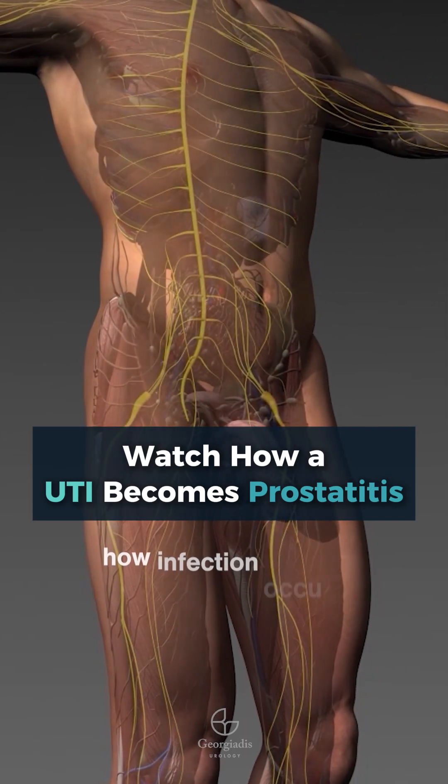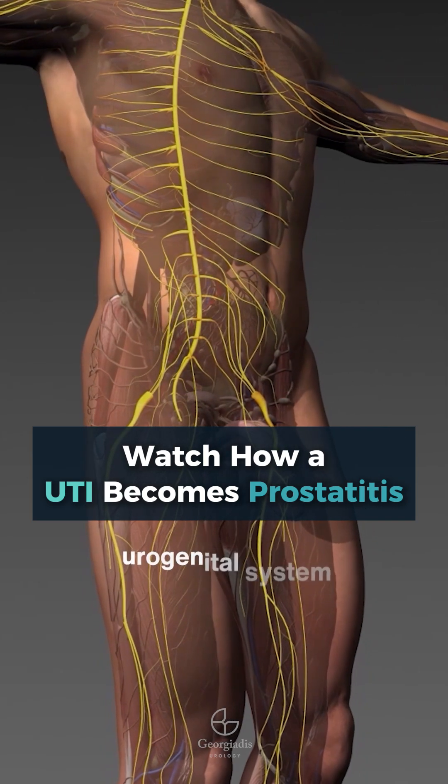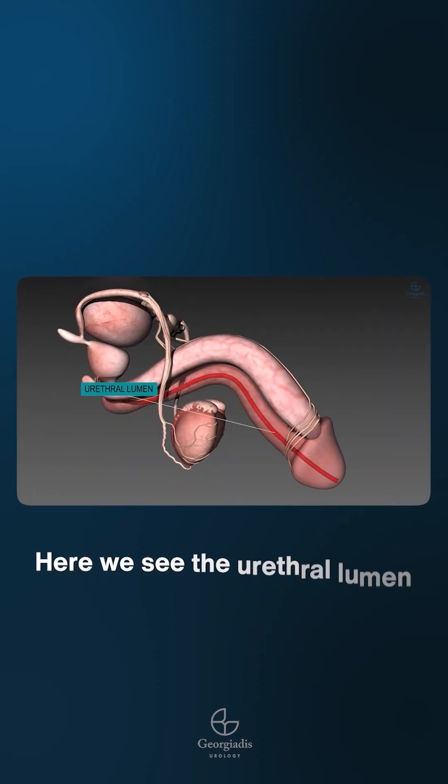In this video, we will talk about how infection occurs in the male urogenital system. Here we see the urethral lumen.